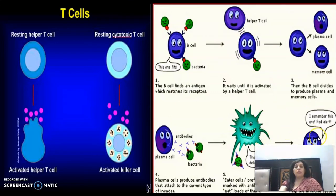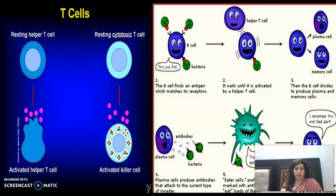Memory cells बनती हैं जो remember रखती हैं कि second infection आने पर कौन सी antibodies बनानी हैं, जिससे secondary immune response तेज और प्रभावी होता है।